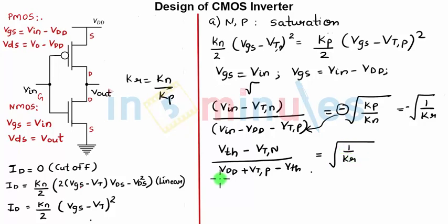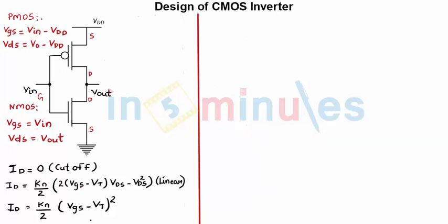Now I'm going to square both the sides, squaring both the sides and getting equation in terms of KR. Let's quickly do this. We have already seen that the equation currently is 1 by KR equal to switching threshold minus the threshold voltage of NMOS upon VDD plus VTP minus the switching threshold.